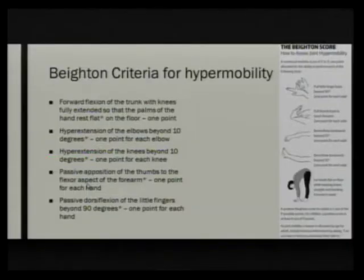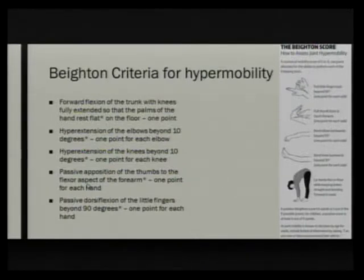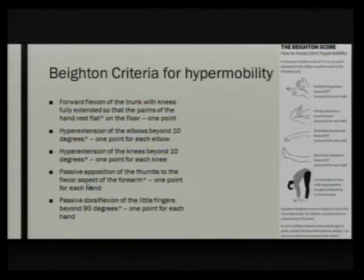The Beighton criteria is where the diagnosis of Ehlers-Danlos kind of hinges — not to diagnose EDS itself, but to determine if someone is hypermobile. It's a scale of nine points: a point for each pinky bent back more than 90 degrees, each thumb pulled down to touch the forearm, each elbow or knee hyperextending beyond 10 degrees (measured with a goniometer), and whether you can place both palms on the floor with knees straight. A score of five or greater is considered positive.